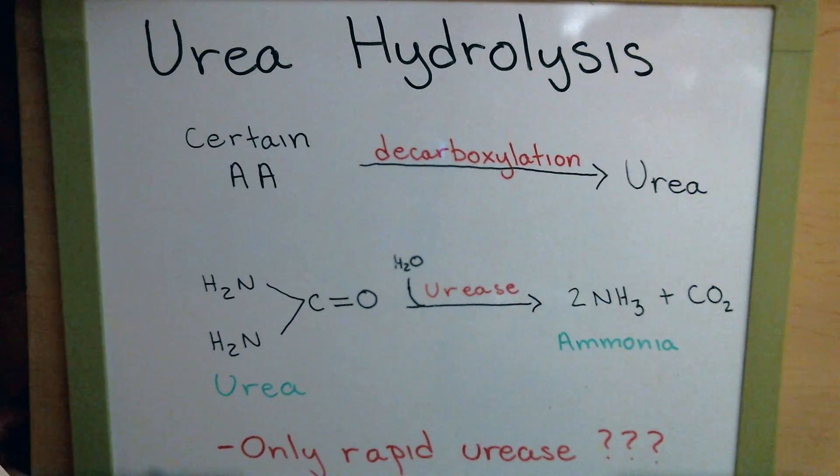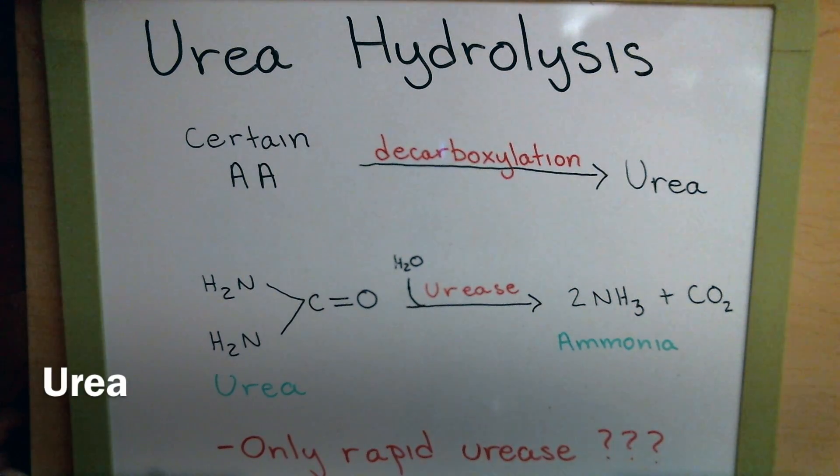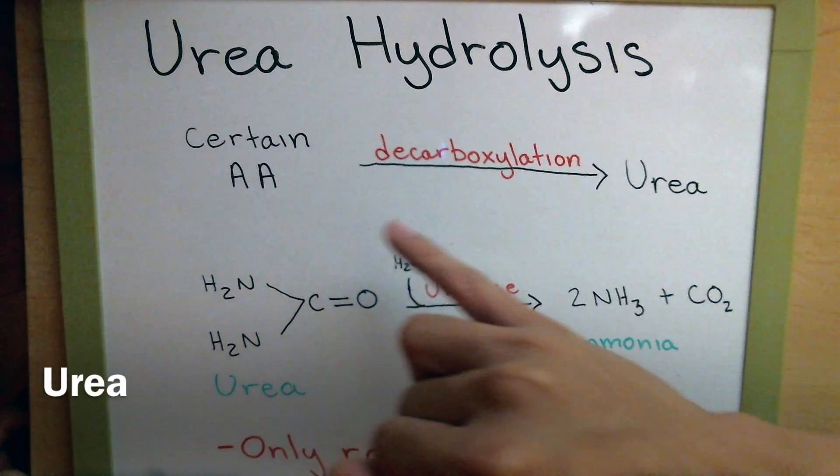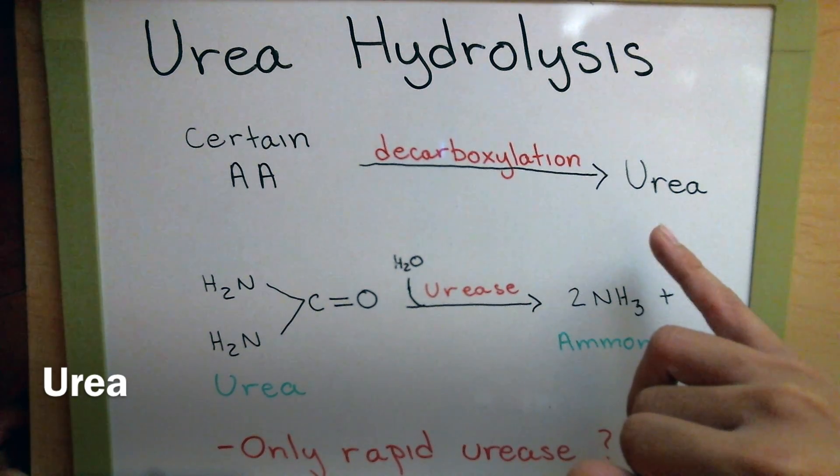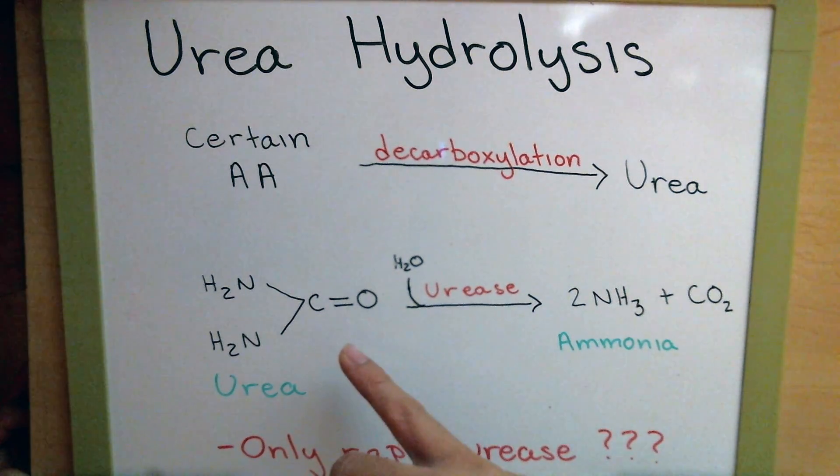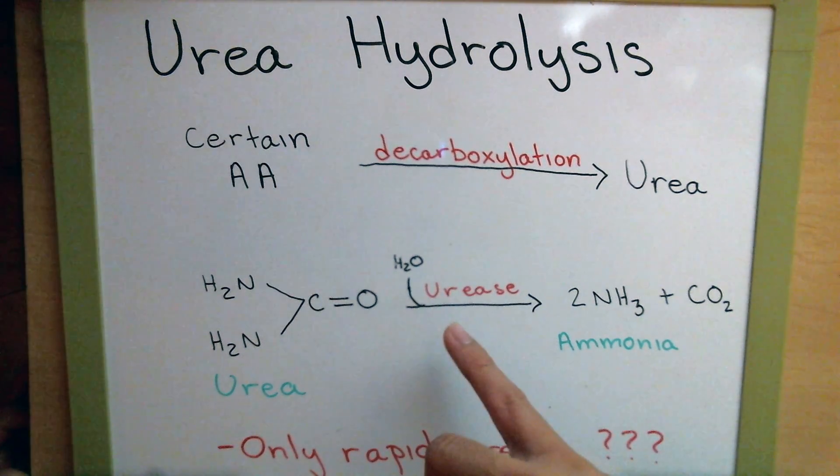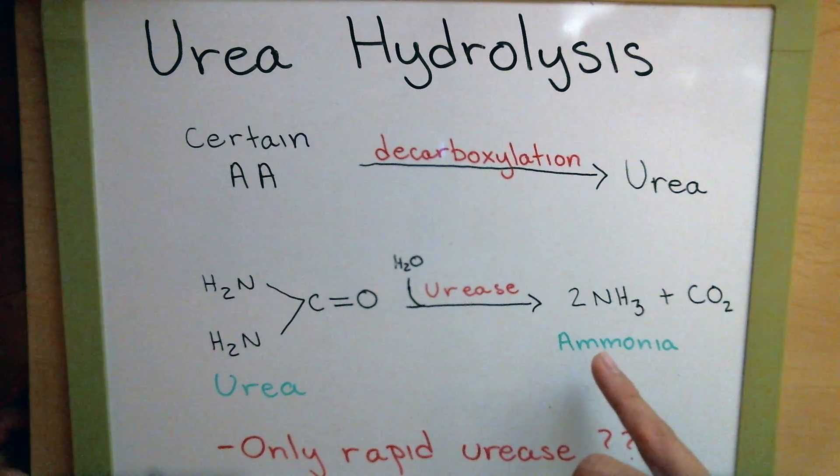We're going to look at urea hydrolysis. This is when we have certain amino acids that undergo decarboxylation to produce urea. This urea, when it interacts with urease and water, is broken down to ammonia. Now, most microbes can do this,